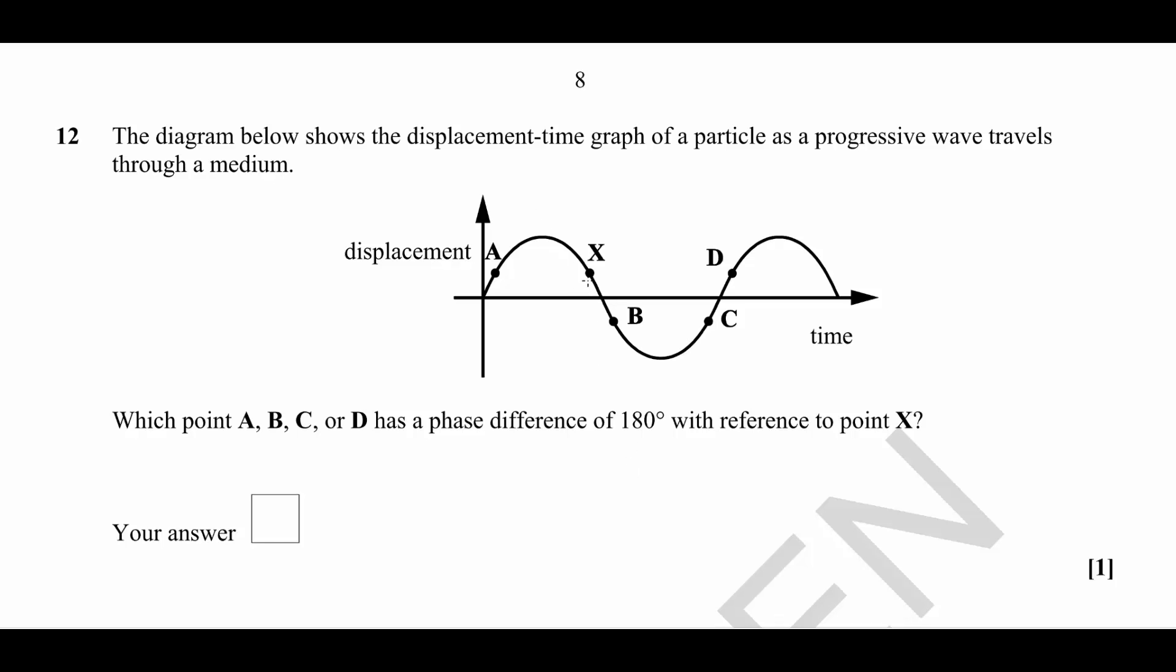So I would attempt this question by first of all working out where 360 degrees would be for X. So X is about here. If we move to the same point on the next wave, X would be here. So therefore the point that is halfway between 360 and 0 is going to be 180, which is roughly here.